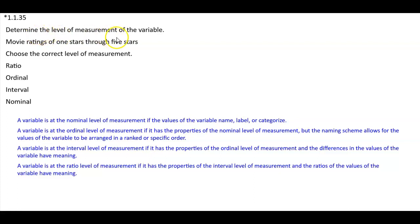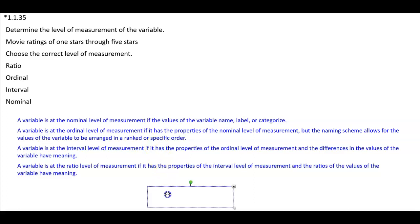Determine the level of measurement of the variable: movie ratings of one star through five stars. A variable is at the ordinal level of measurement if it has the properties of the nominal level of measurement, but the naming scheme allows for the values of the variable to be arranged in a ranked or specific order. Therefore, the answer for this variable is ordinal.